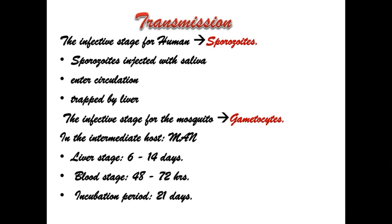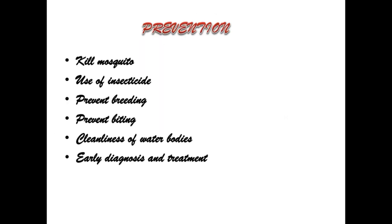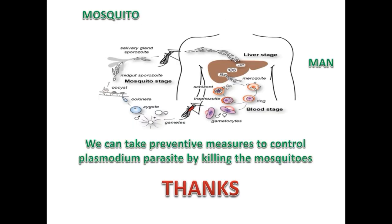Prevention methods include: killing mosquitoes using insecticides, preventing breeding, preventing biting, maintaining cleanliness of water bodies, and early diagnosis and treatment. We can take these preventive measures to control the Plasmodium parasite.